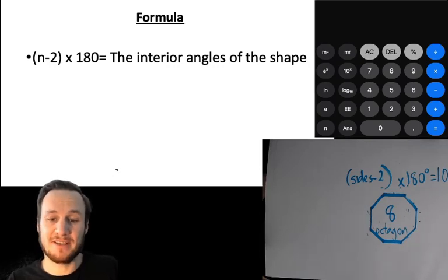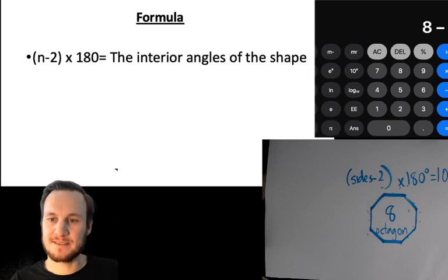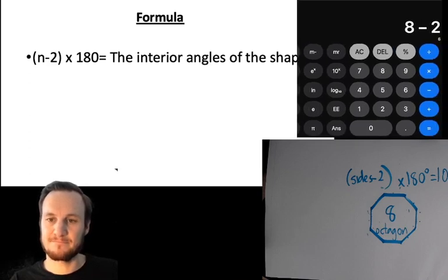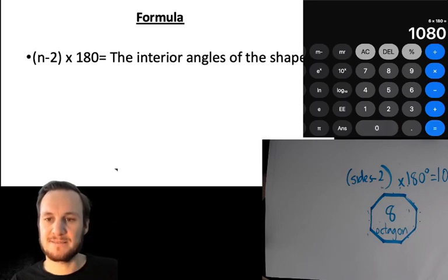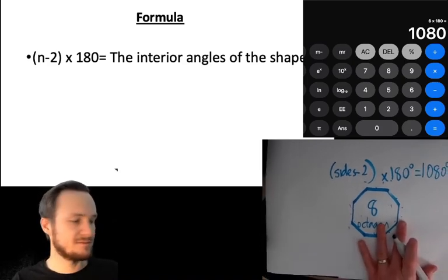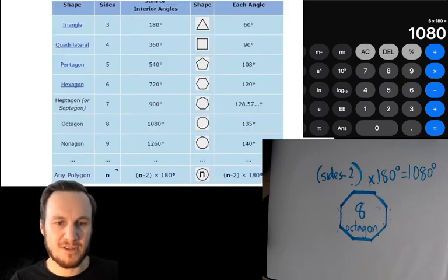Let's try this on our calculator. If we took the formula that we had already and we did eight take away two, equals six. And then we got our six and we did six times 180 and we got our answer. Our answer is 1080.